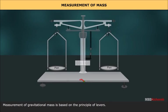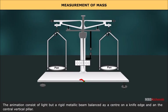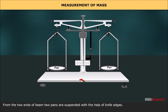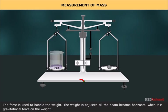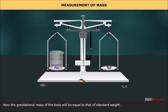Measurement of gravitational mass is based on the principle of levers. The animation consists of a light but rigid metallic beam balanced at a center on knife edge and the central vertical pillar. From the two ends of the beam, two pans are suspended with the help of knife edges. The body to be weighed is placed on the left pan and standard weight on the right pan. The force is used to handle the weight. The weight is adjusted till the beam becomes horizontal. When it is, gravitational force on the weight here, the gravitational mass of the body will be equal to that of the standard weight.